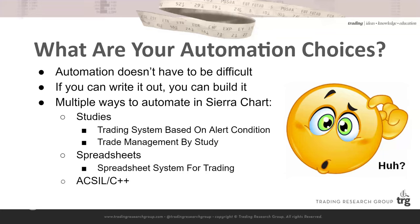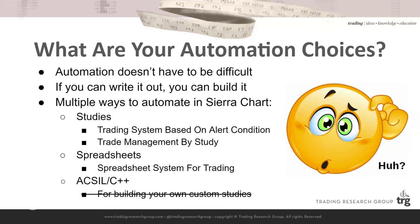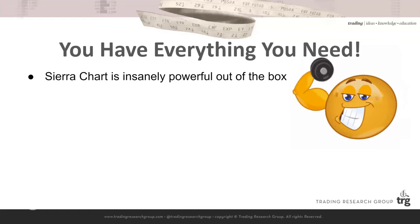These days I tend to use both — the spreadsheet system for certain things it can do that the studies can't, and the studies for everything else because they're simpler and faster. Using them combined is really the most powerful approach. Lastly, there's what Sierra Chart calls ACSIL — most people would call it C++ — which is really just C++ with some custom bells and whistles. We are not going to be touching that. It is great for building custom studies, and I've actually begun doing that, but we will not need it for this course whatsoever. If you're not a programmer, don't worry.